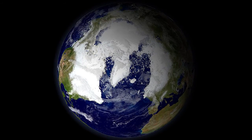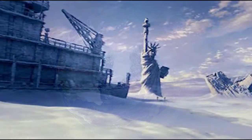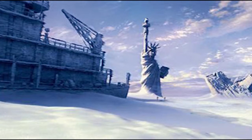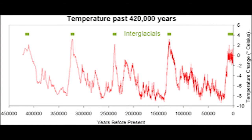Glacials are characterized by cooler and drier climate over most of the earth. Mountain glaciers and otherwise unglaciated areas extend to lower areas due to a lower snow line. Sea levels drop due to the removal of large volumes of water above sea level in the ice caps. The earth has been in an interglacial period known as the Holocene for more than 11,000 years already.